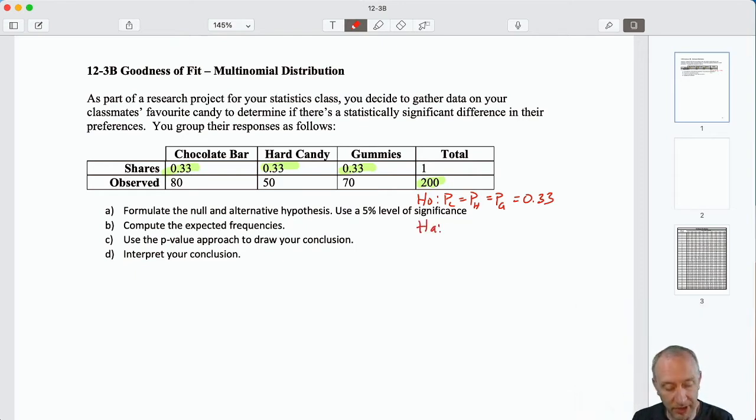The alternative hypothesis is simply that not all proportions are equal to 0.33.